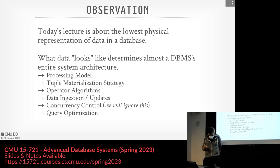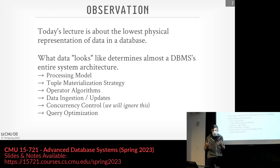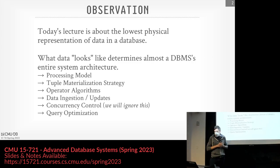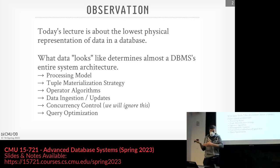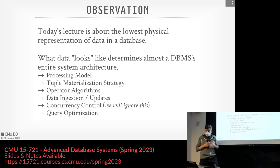Today's lecture is about the lowest level of the database system — how we're actually going to represent data on disk and in memory. What are the actual bits and bytes for representing tuples, their attributes, and their values? The way data is laid out will have a very important impact on how we design the rest of the database system.